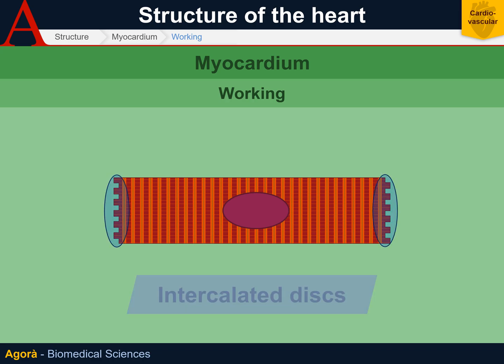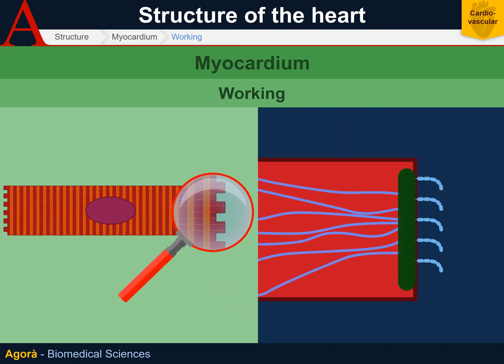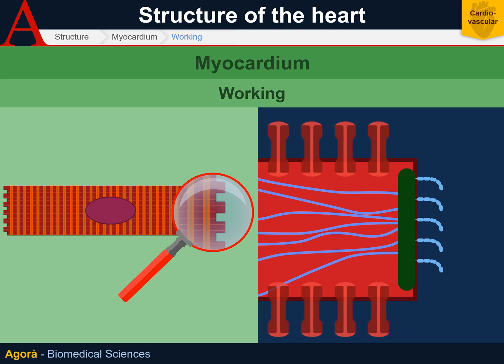The myocardiocytes are connected to each other by intercalated discs, an identifying feature of cardiac muscle with a staircase-like structure. On the vertical part, we can see desmosome-like junctions located on the longitudinal ends of the cardiomyocyte, which allow maximum resistance to traction. On the horizontal axis, gap junctions facilitate communication, allowing myocardial cells to react as one big functional syncytium.